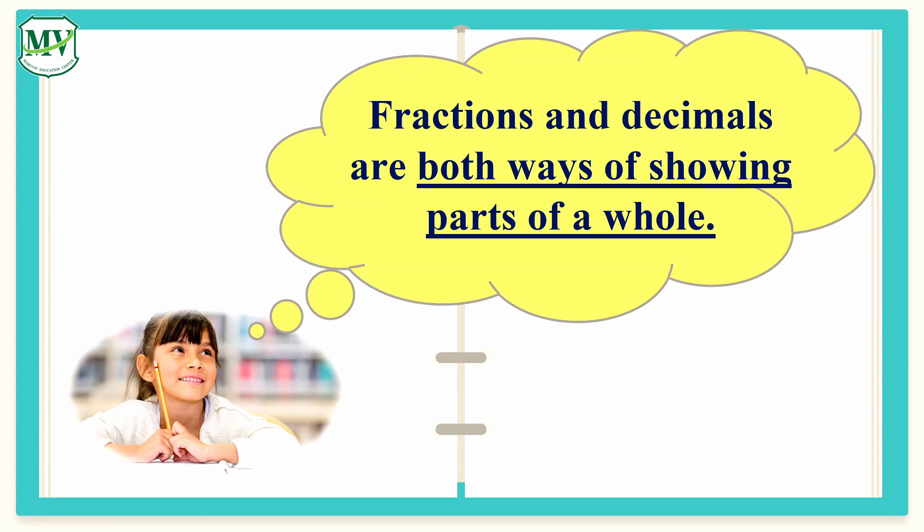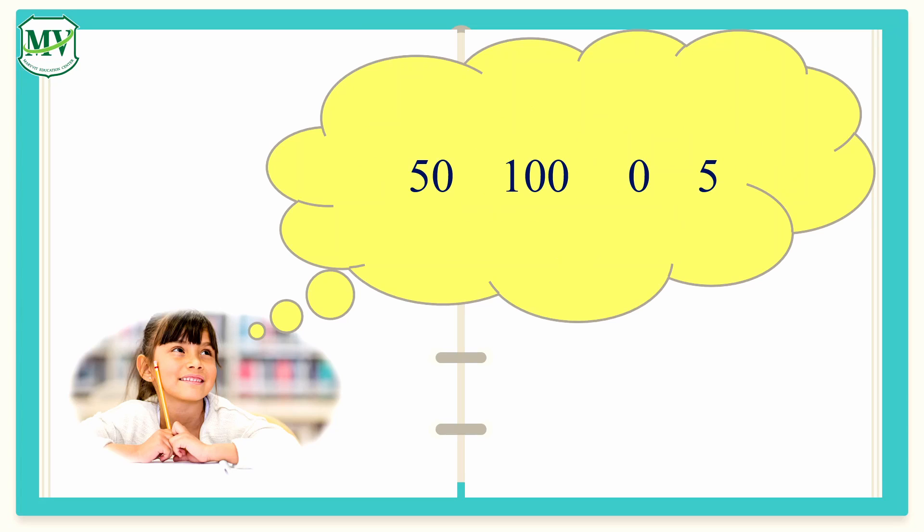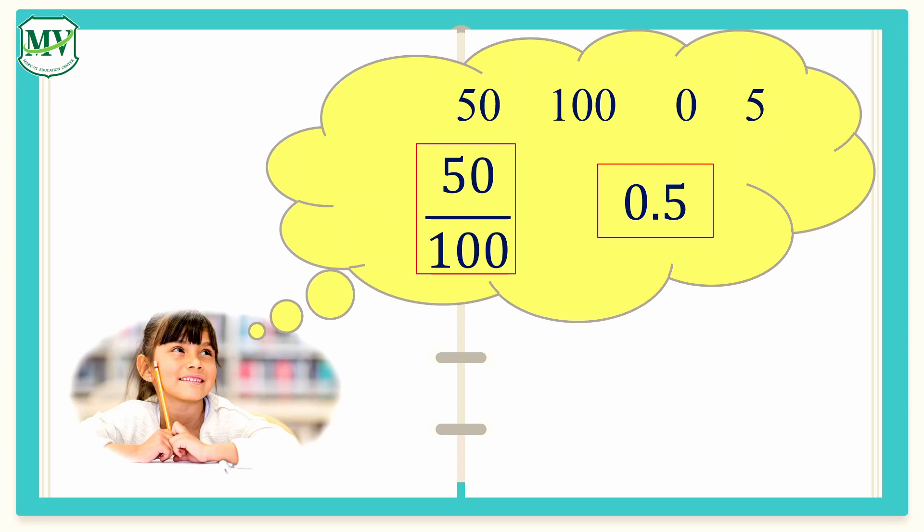Fractions and decimals are both ways of showing parts of a whole. There are just two ways to represent numbers. For fractions, it has numerator and denominator, while in decimals, the whole number part and fractional part are connected through a decimal point.